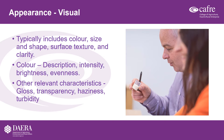With respect to colour, there are a number of key elements. Description refers to the actual colour name or hue. Intensity is the strength of colour from dark to light. Brightness is the purity of colour from dull to pure. Evenness refers to colour distribution from uneven or blotchy to even. Other relevant factors include gloss, transparency through to opaqueness, haziness and turbidity.